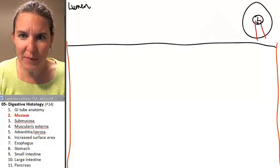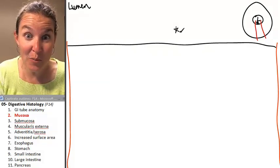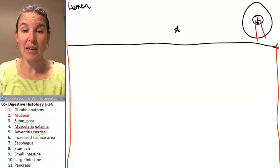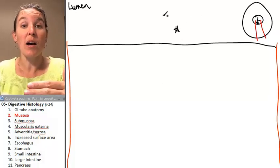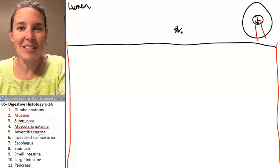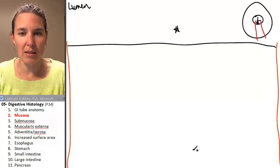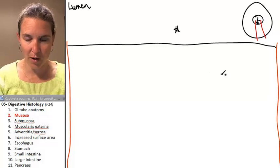So here's the lumen and here's the lumen. And it's the same thing. So now I'm going to look at my layers from luminal to basolateral in this direction. You got where I was going with all that.